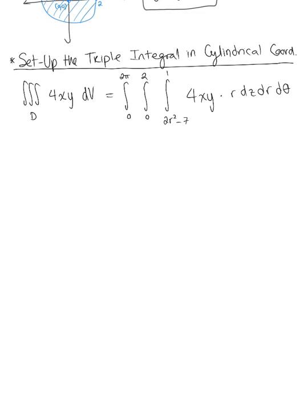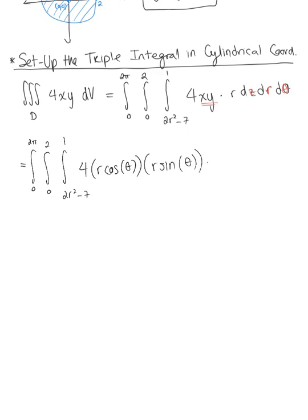At this point we check the differential and notice we have too many variables — we need to rewrite x and y as polar coordinates. So x becomes r cosθ and y becomes r sinθ. The integral becomes: from 0 to 2π, 0 to 2, 2r squared minus 7 to 1, of 4 · r cosθ · r sinθ · r dz dr dθ.